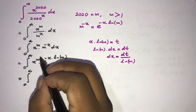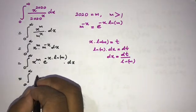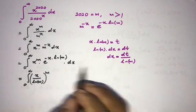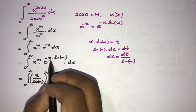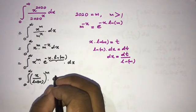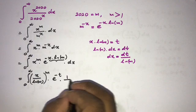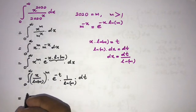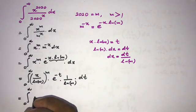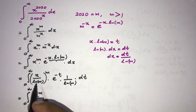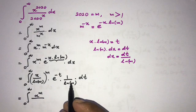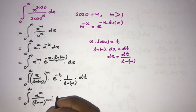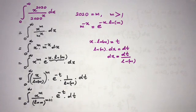The lower and upper limits remain zero to infinity. Now x equals t over natural log of m, so x to the m becomes t over natural log of m, all to the m power. And x times natural log of m equals t, so e to the minus x times natural log of m becomes e to the minus t. Substituting dx as dt over natural log of m, the denominator becomes natural log of m to the m plus 1. So we have the integral from zero to infinity of t to the m over natural log of m to the m plus 1 times e to the minus t dt.